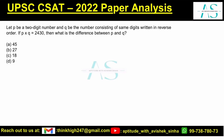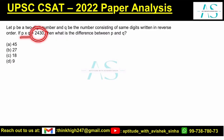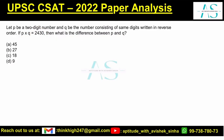Let p be a two-digit number and q be the number consisting of the same digits written in reverse order. If p × q = 2430, then what is the difference between p and q?